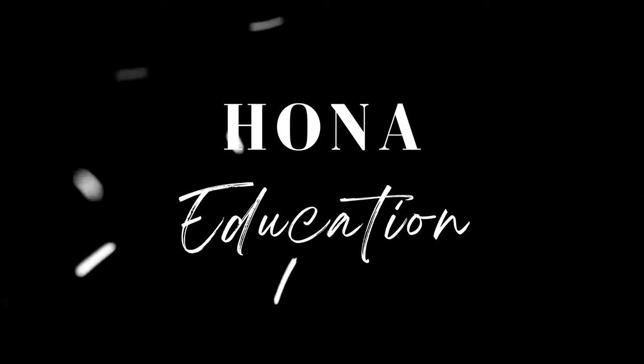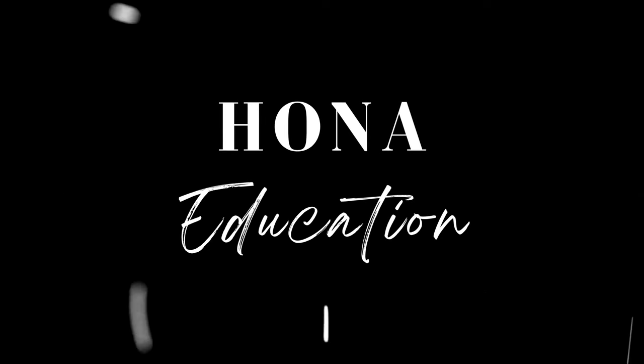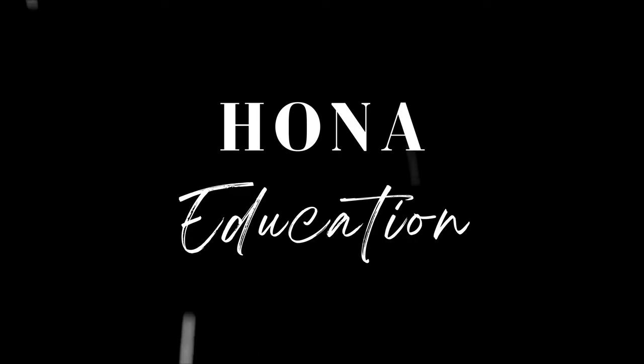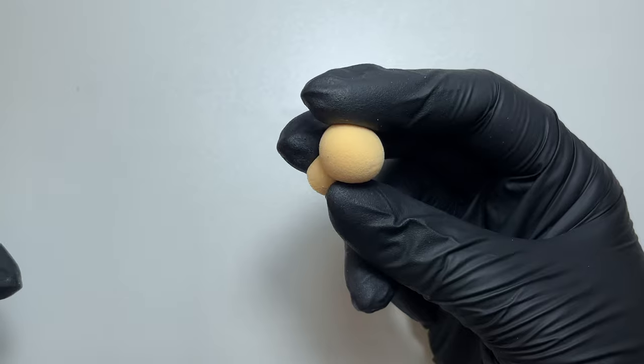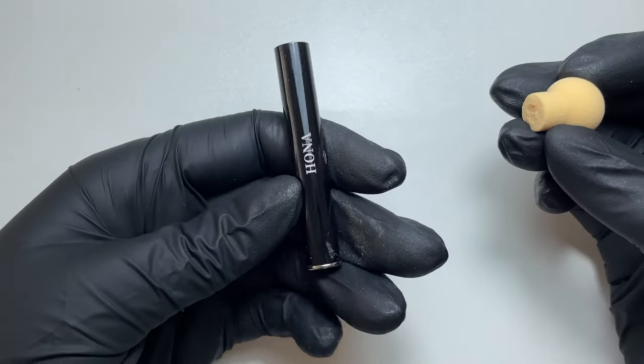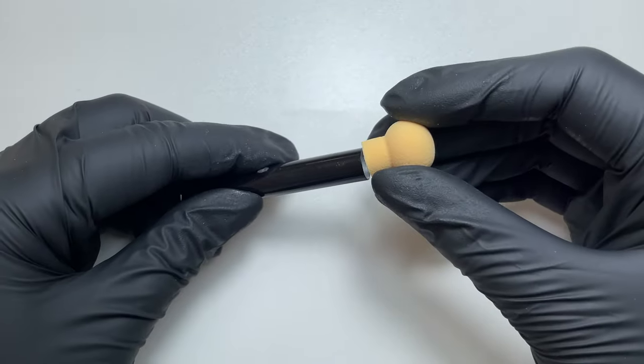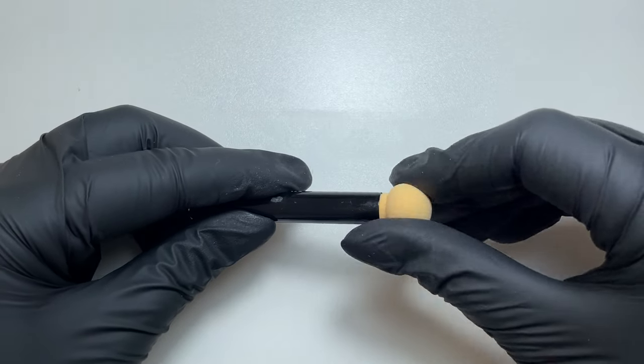Hello guys, welcome back to another Hona nail art tutorial. Today we're going to be going over ombre in three different ways using all Hona products, so stay tuned for hot tips. The first look we're going for is the classic baby boomer, so we're going to be using these little Hona sponges that conveniently pop right into the lids of your brushes.